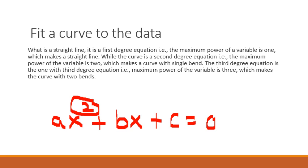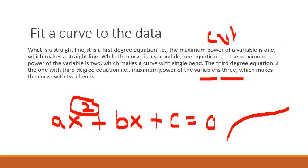The maximum power of the variable being 2 makes a curve with a single band. The third degree equation is called a cubic equation — cubic, C-U-B-I-C. This third degree cubic equation is the one where the maximum power of the variable is 3, which makes a curve with two bands.